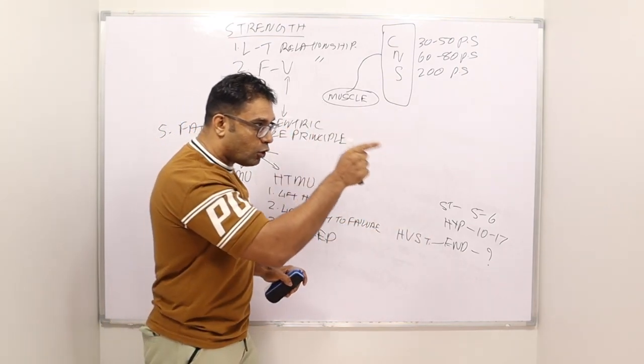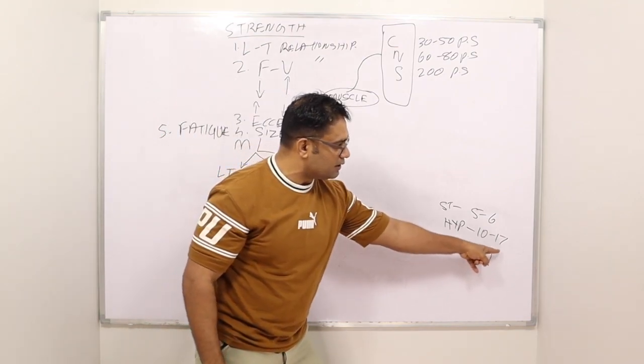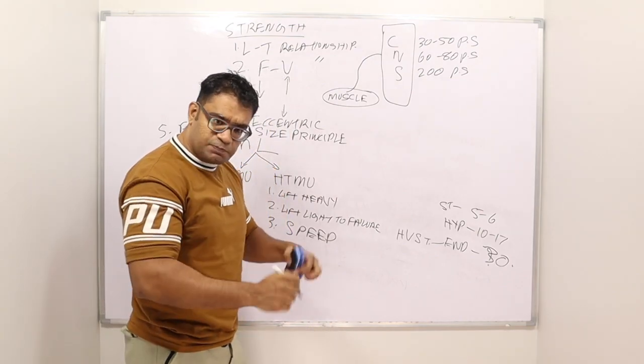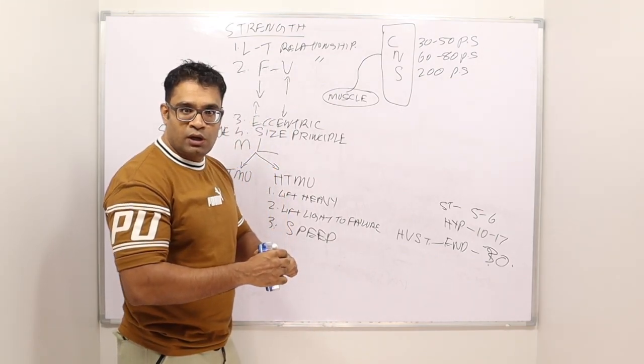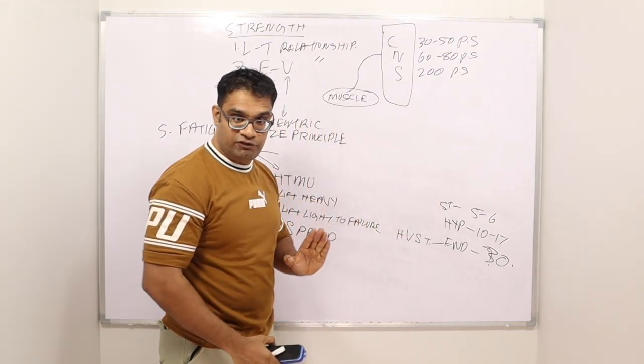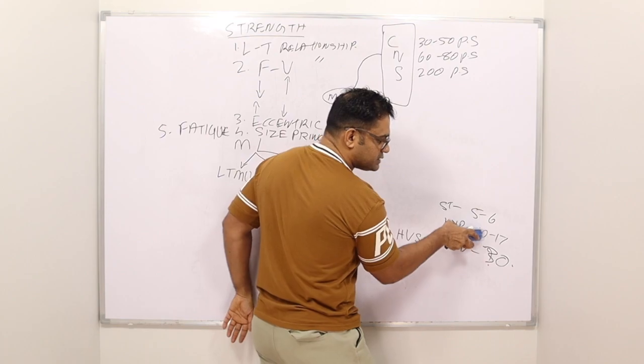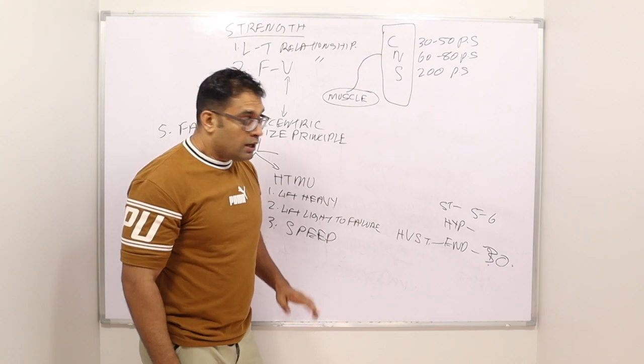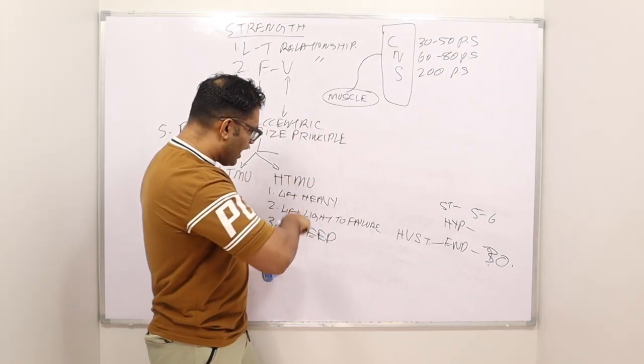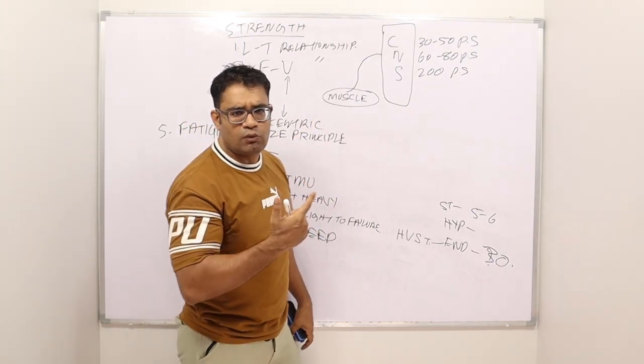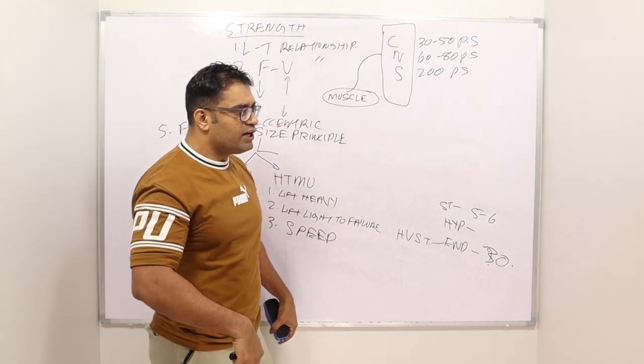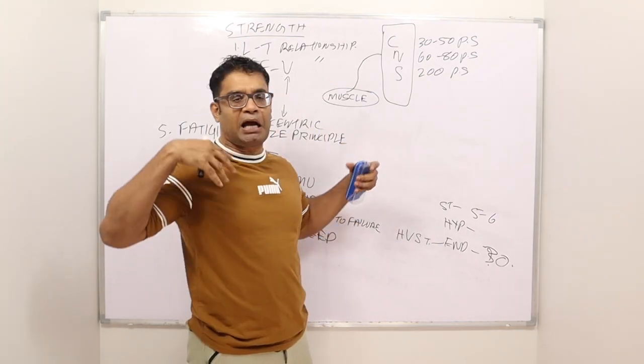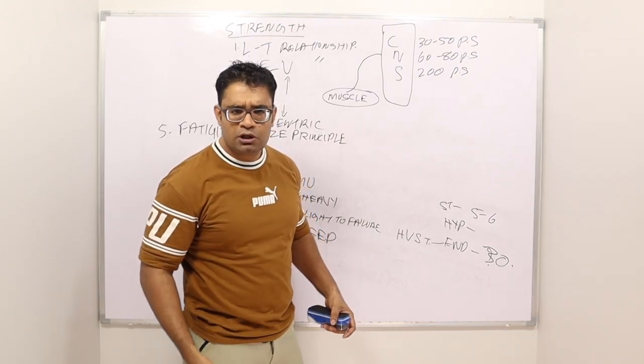But when you do light to full failure, you will hit the high threshold, but if your focus is this, you are not serving the purpose. You want the actin-myosin cross-bridging to happen proper. You want proper mechanical loading to happen. That is the reason why you train here. The third way of doing it is speed training. When you do speed training, you are again working high threshold motor units. So you have these three ways of doing it: lift heavy, lift light to failure, or you do speed training, depending on what you want.